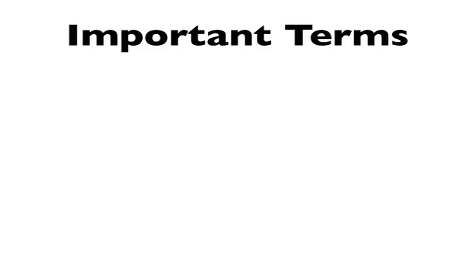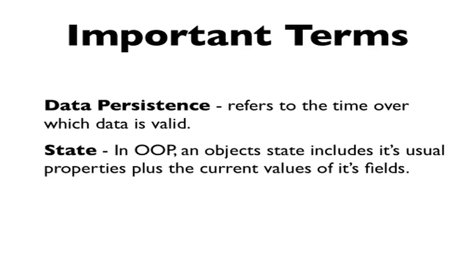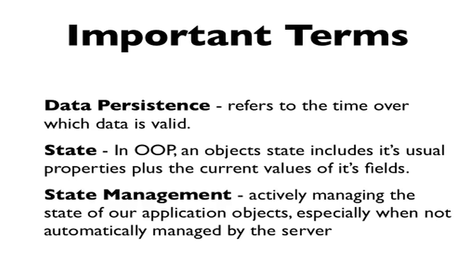The server has no memory of that request and response. The next time the client sends a request, the server will create entirely new request and response objects. Data persistence is the term used in computing to refer to the time over which data is valid. We saw that any data provided at a request only persists within the current request-response cycle. In object-oriented programming, an object's state includes its usual properties, such as the methods it includes, plus the current value of its fields. We want the state of an object to persist over time, so state management covers any techniques where we actively manage the state of an application's objects and data, especially when it's not automatically managed by the server.